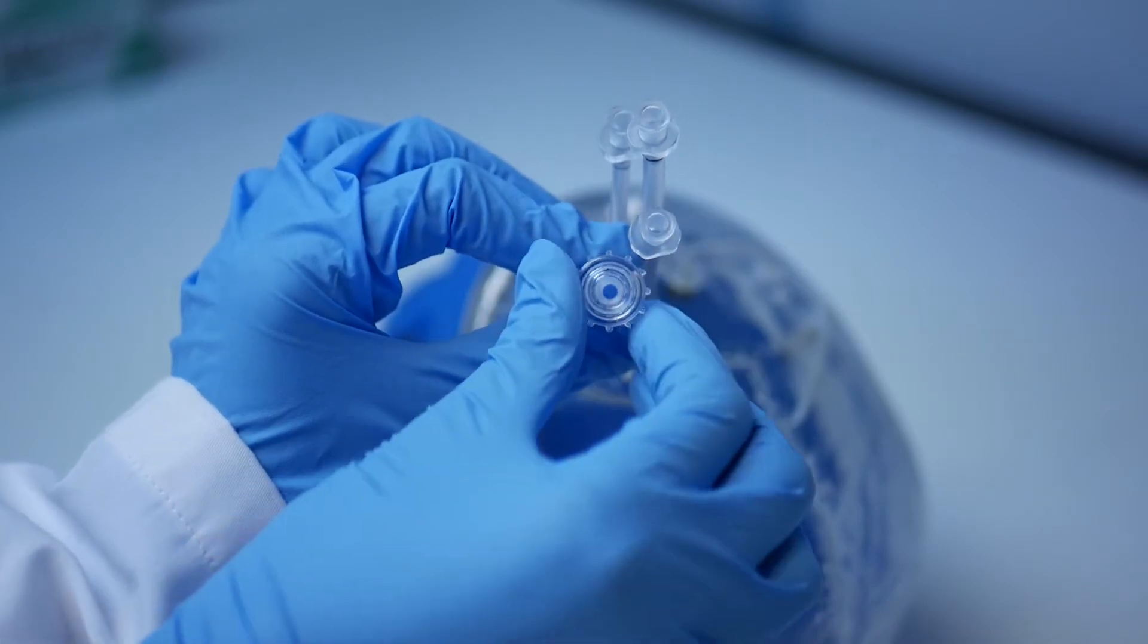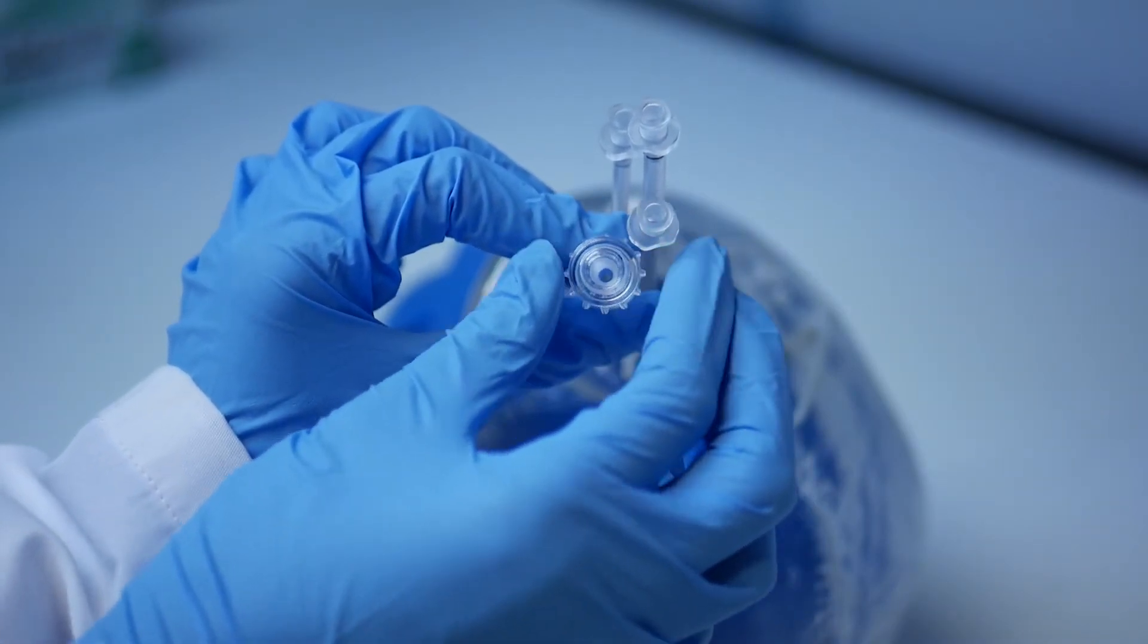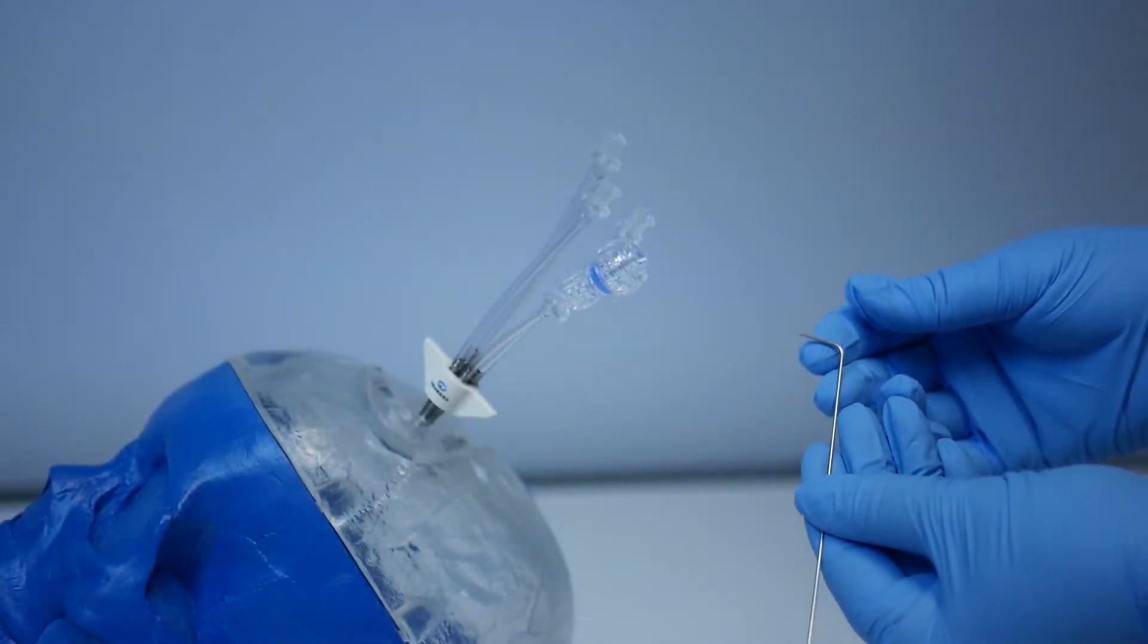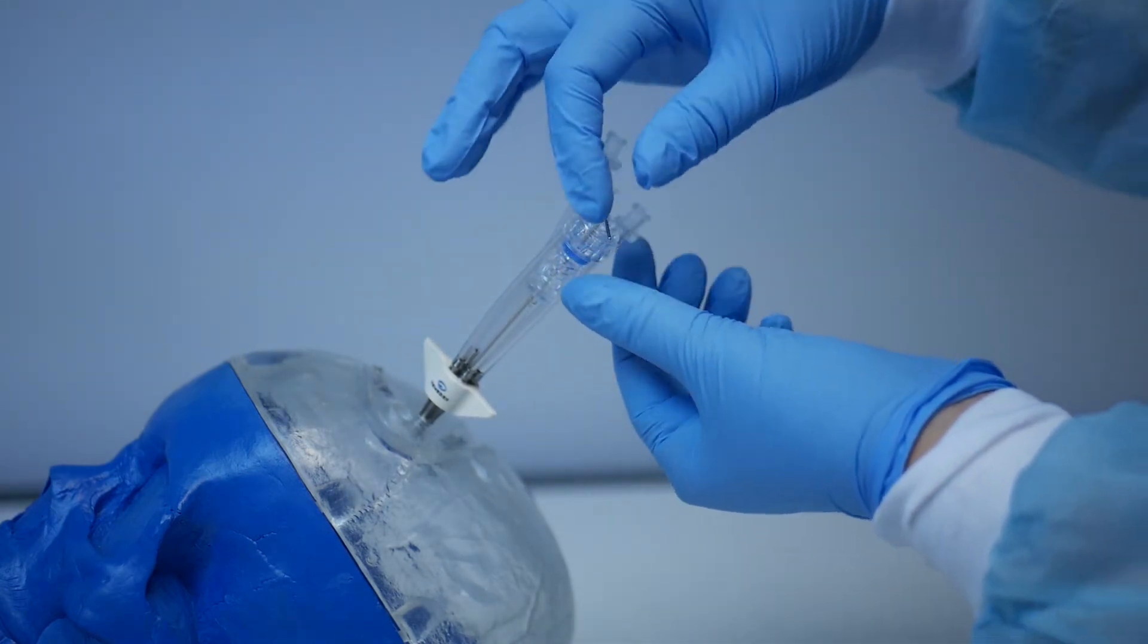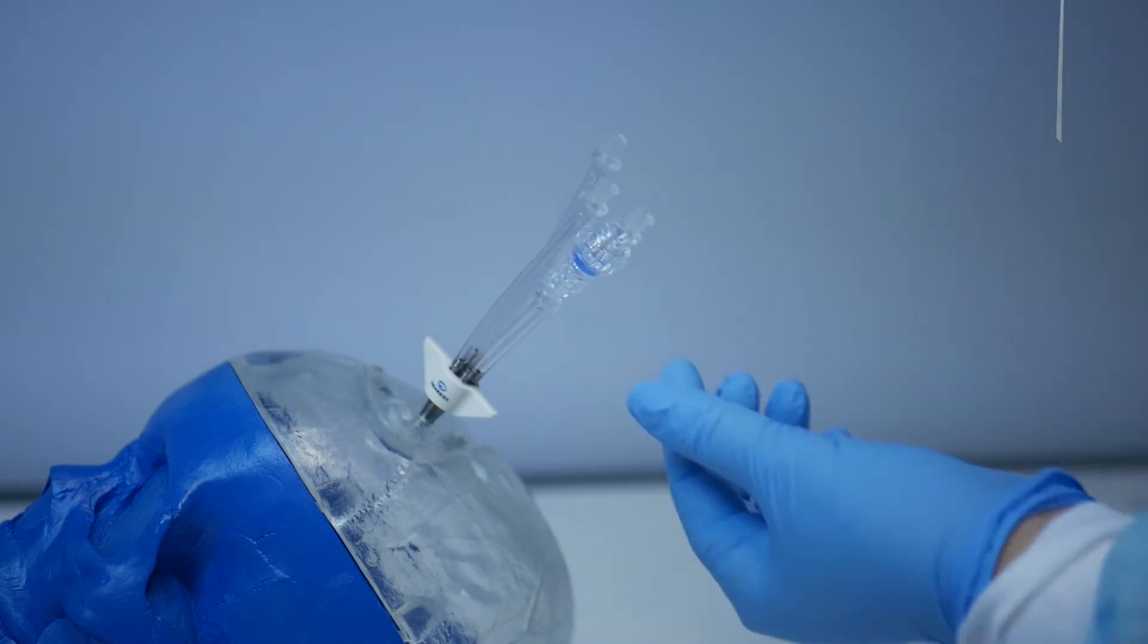Open the compression fitting on the short pigtail. Take the Durapiercer that you set aside earlier and insert it through the compression fitting on the short pigtail of the quadlumen bolt. Remove the Durapiercer after piercing the dura.